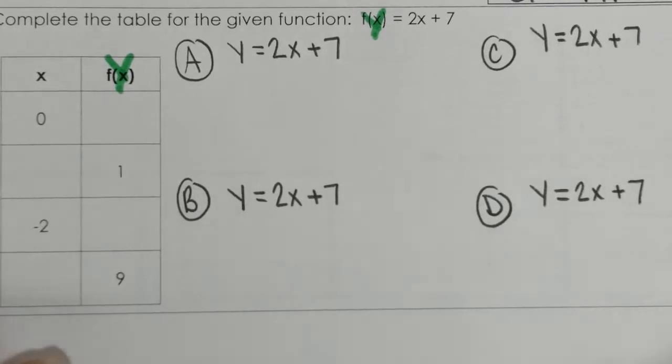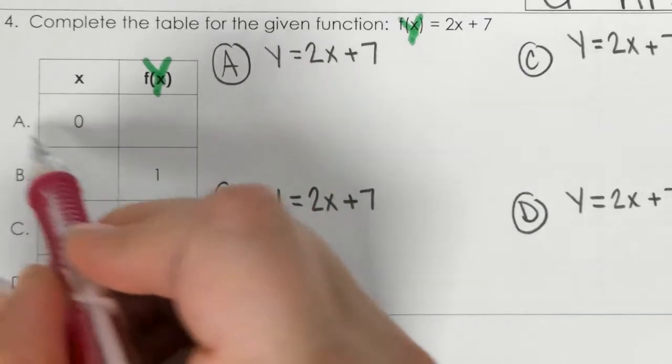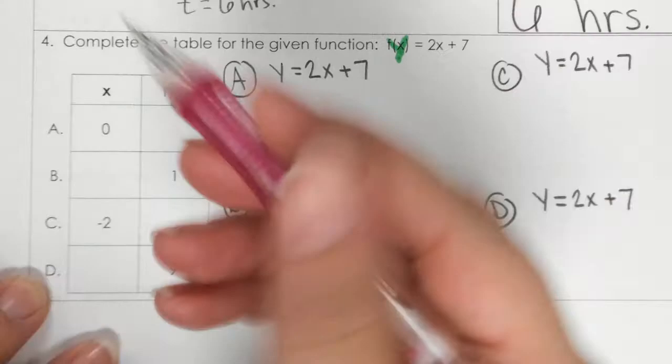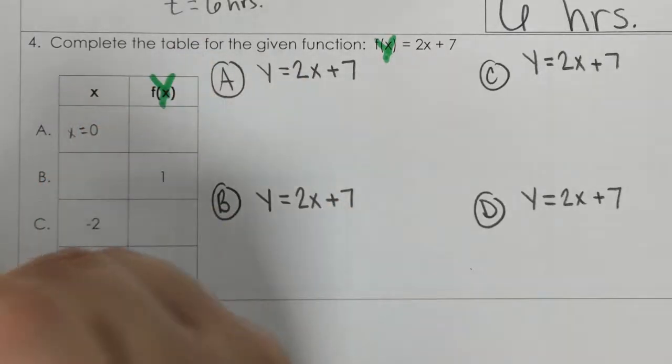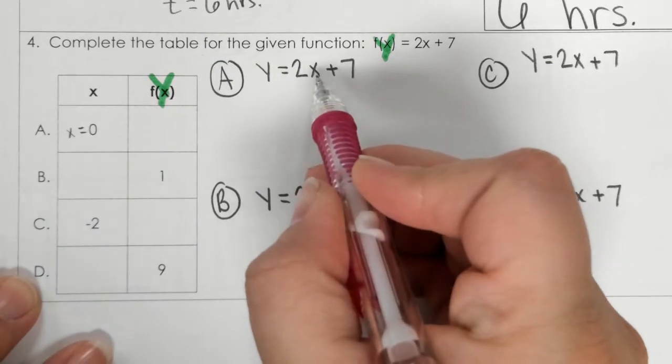Alright, so now I look here and I say, okay, for letter A, this 0 is in the x column. So, I know that this is x equals 0, so I plug 0 in for that x right there.